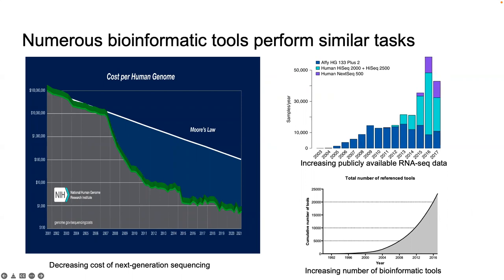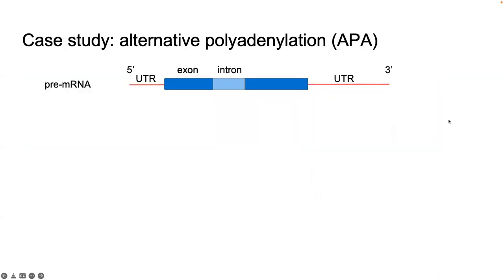One way RNA-seq data can be used is to study different aspects of pre-mRNA processing. Here we used as a case study alternative polyadenylation. As some background, pre-mRNA is transcribed from genomic DNA, and it has several regions like UTRs — untranslated regions — and then exons and introns that make up the coding region.